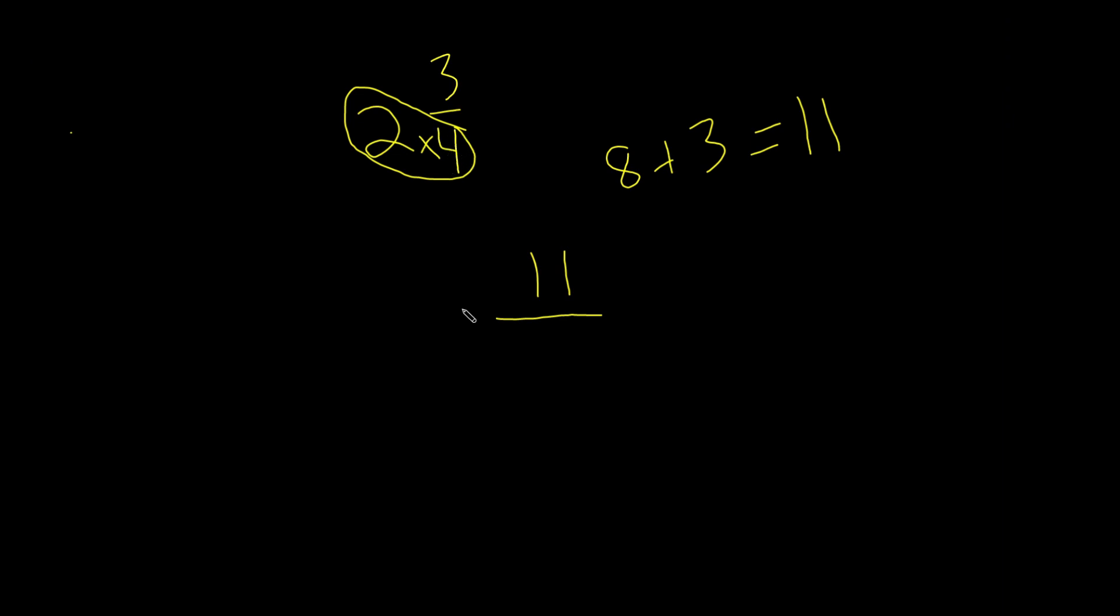So we're going to keep the 4 over here. So 4 is going to be our denominator, and this is our mixed number in improper fraction form. We keep the denominator as is, we multiply the whole number with the denominator and add that to the numerator, and we have that as our new numerator. So this is our answer.